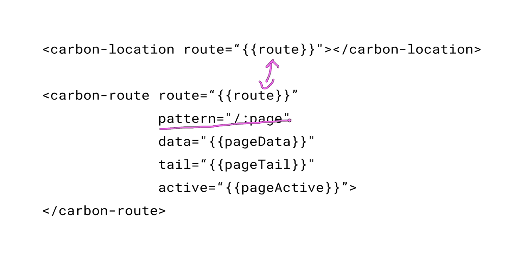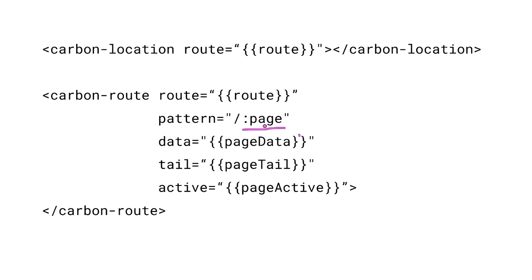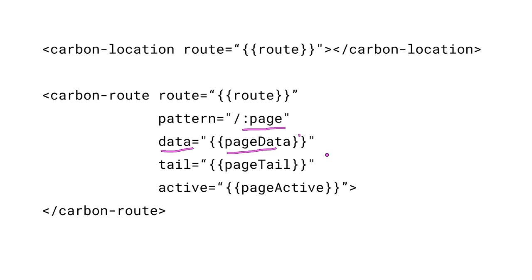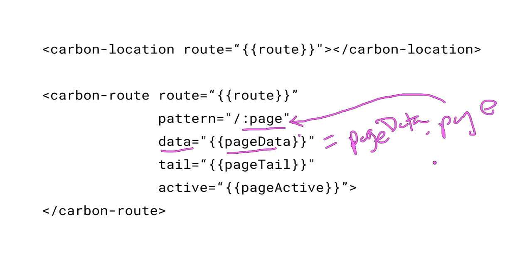They define a pattern, which is the URL that they're interested in matching. In this case, we're saying the pattern is slash, and then we're using this token syntax to say anything after slash we'll refer to as page. You could also have a multi-part URL — slash foo, slash bar, slash colon, some piece of data. Once we have a data token, we can expose that to the rest of the app using this data attribute. So if the user was on a page called slash foo, page data dot page would equal foo.